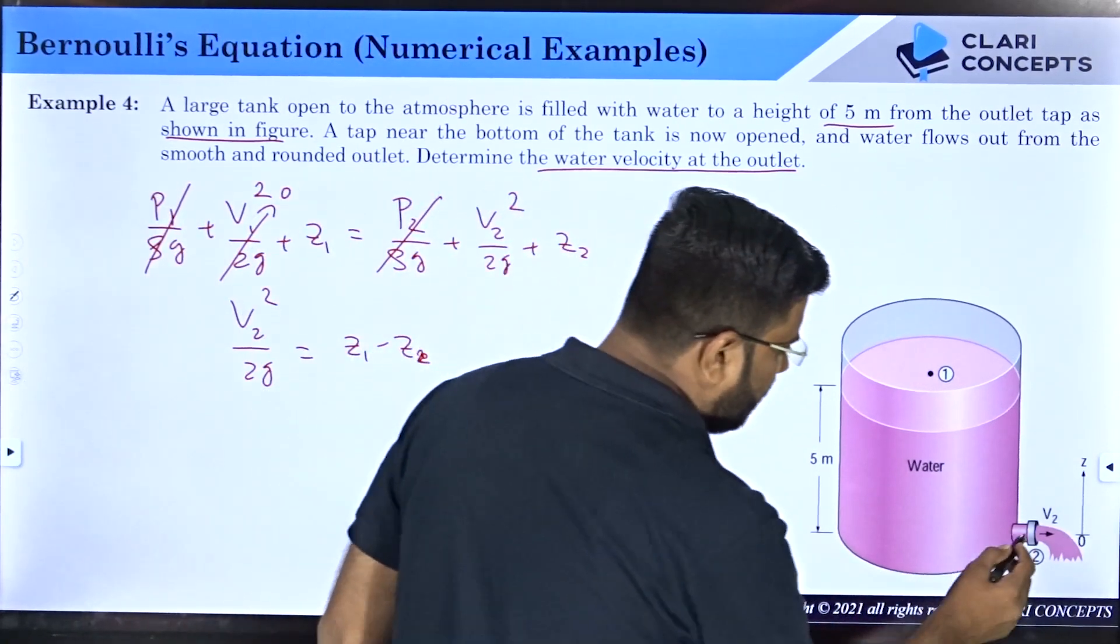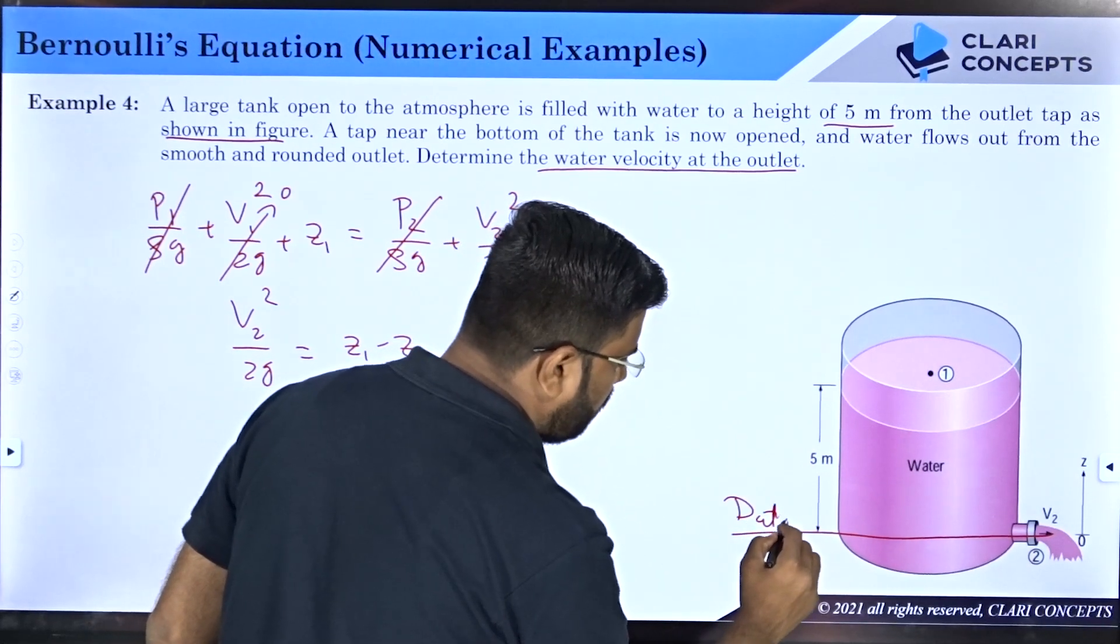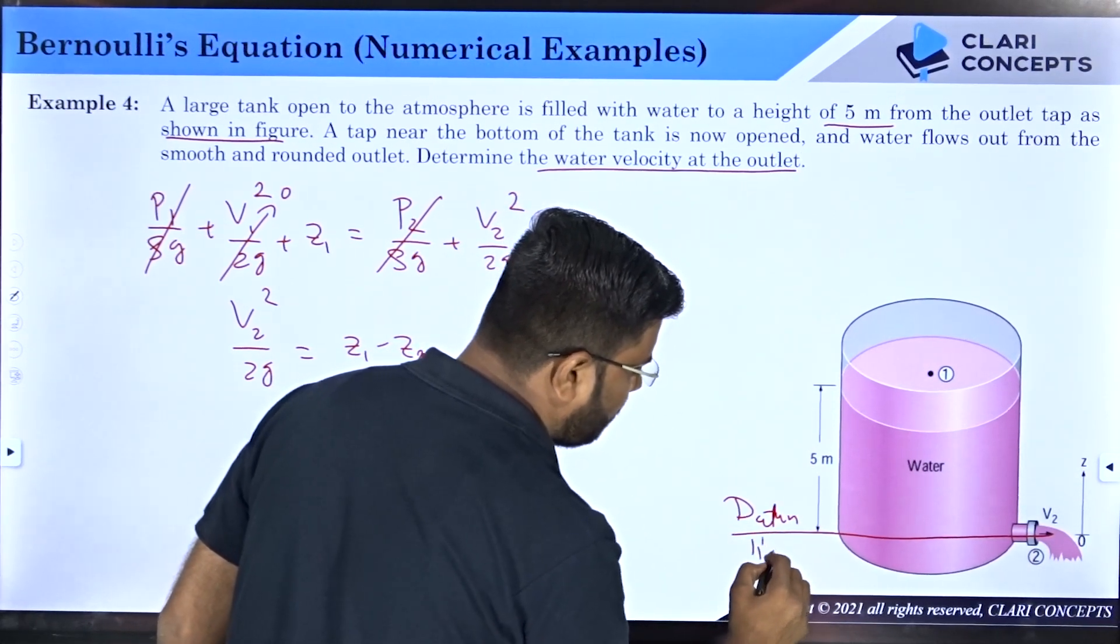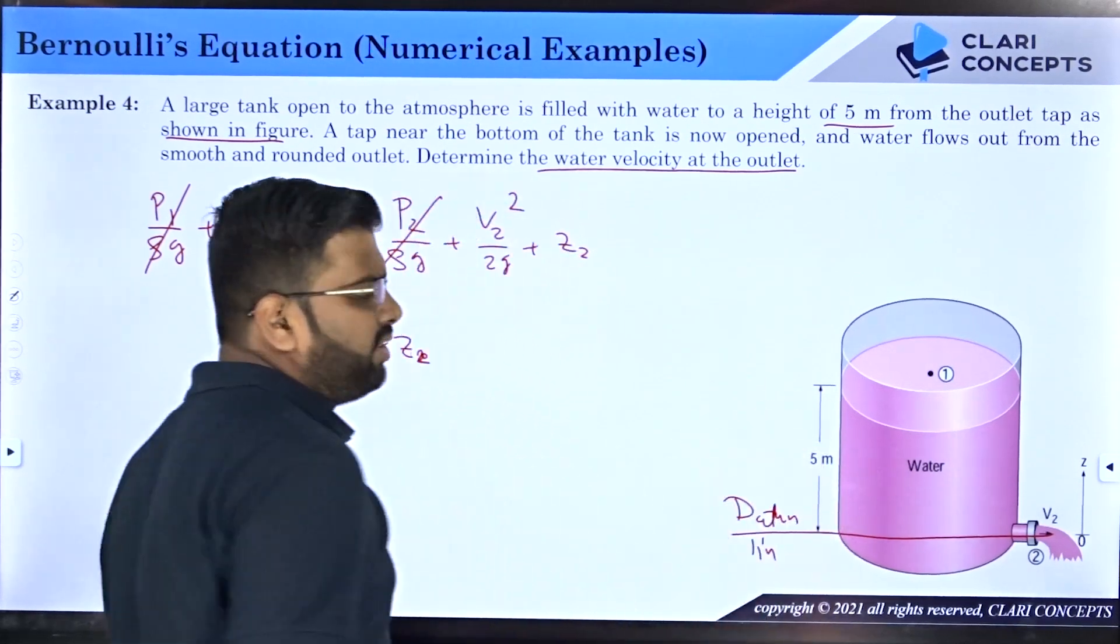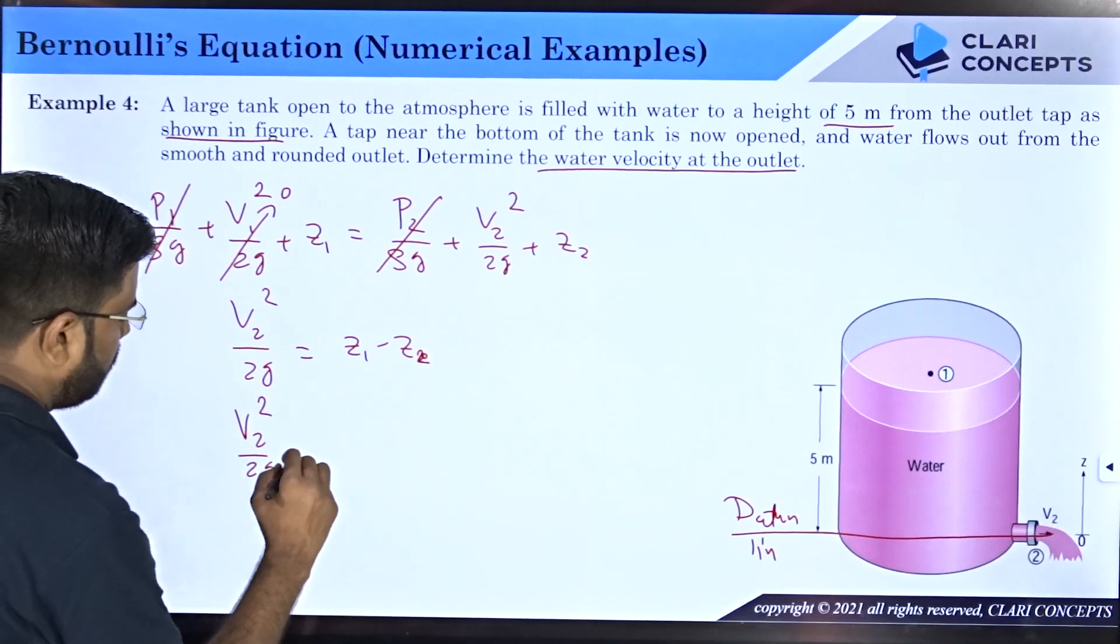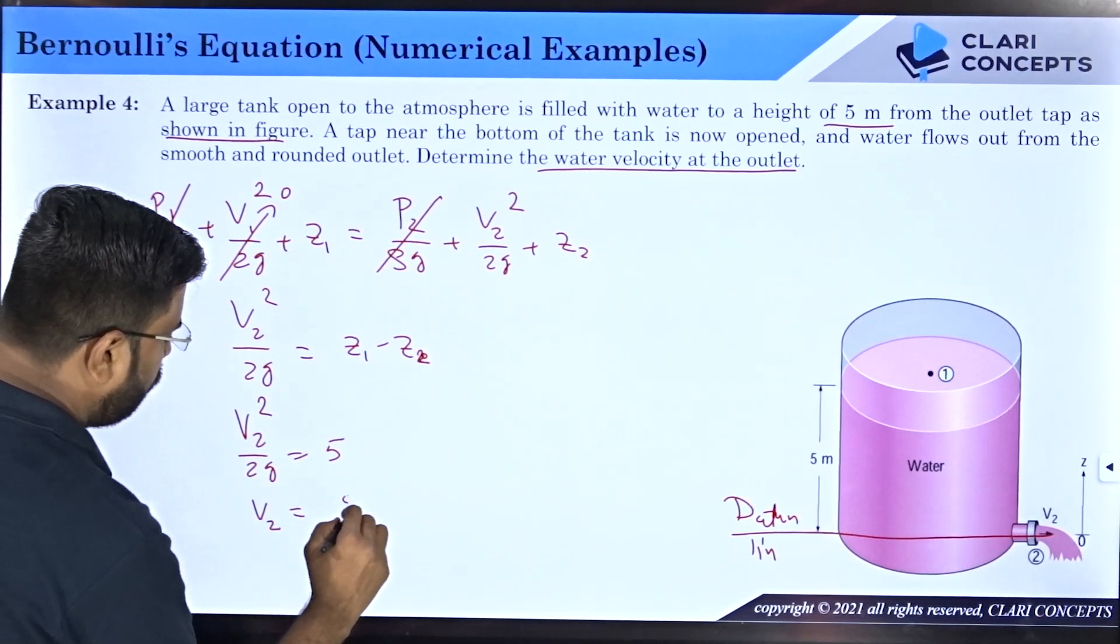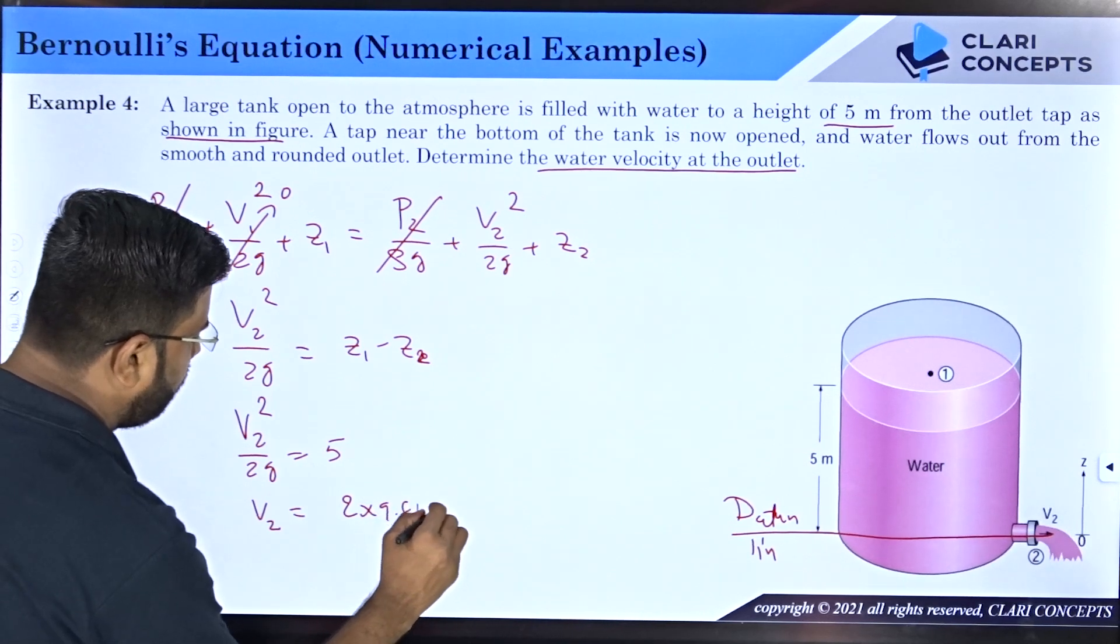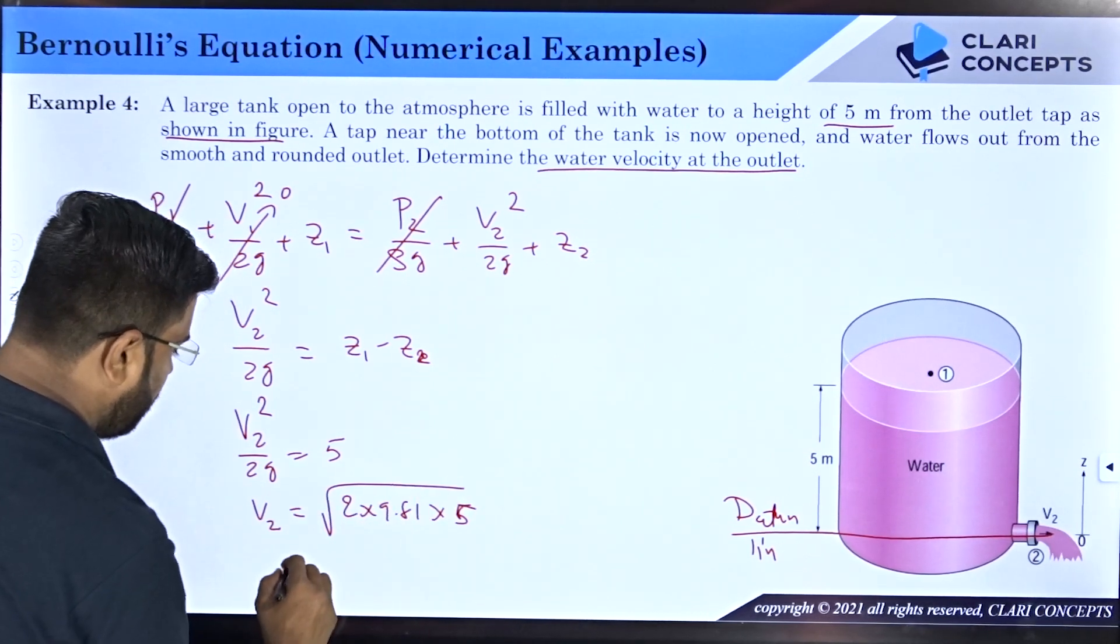Imagine z2 itself to be the datum line. If I say the datum line is this itself, so z1 - z2 is directly 5 meters, the difference between the two heights. So v²/(2g) = 5, so v2 = √(2×9.81×5).